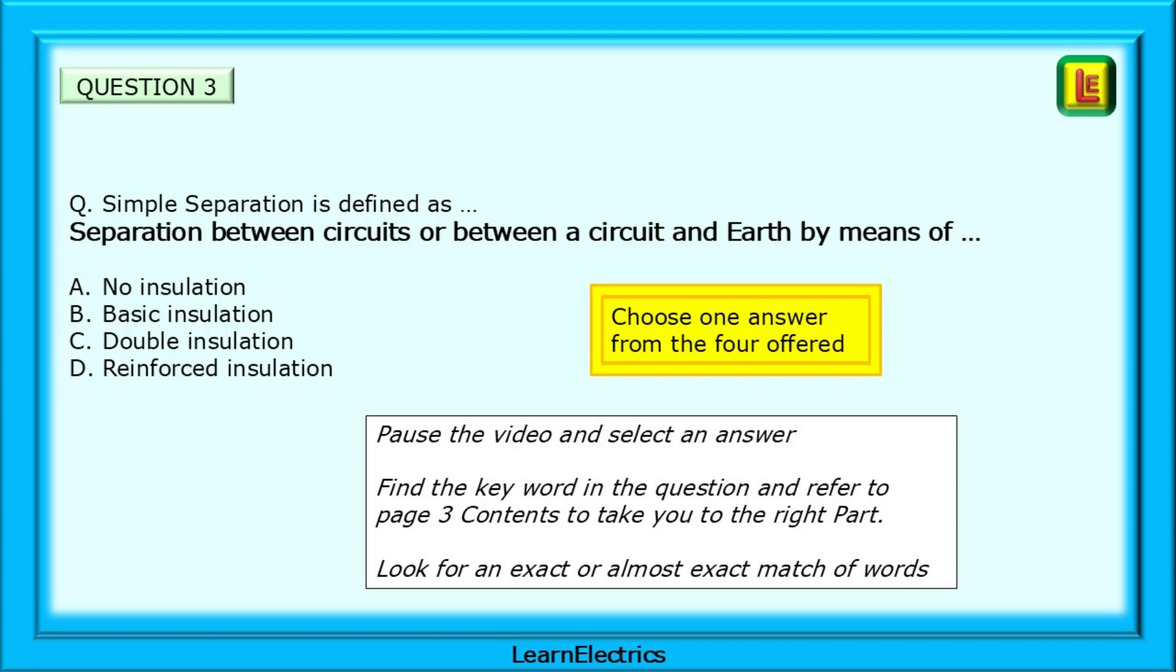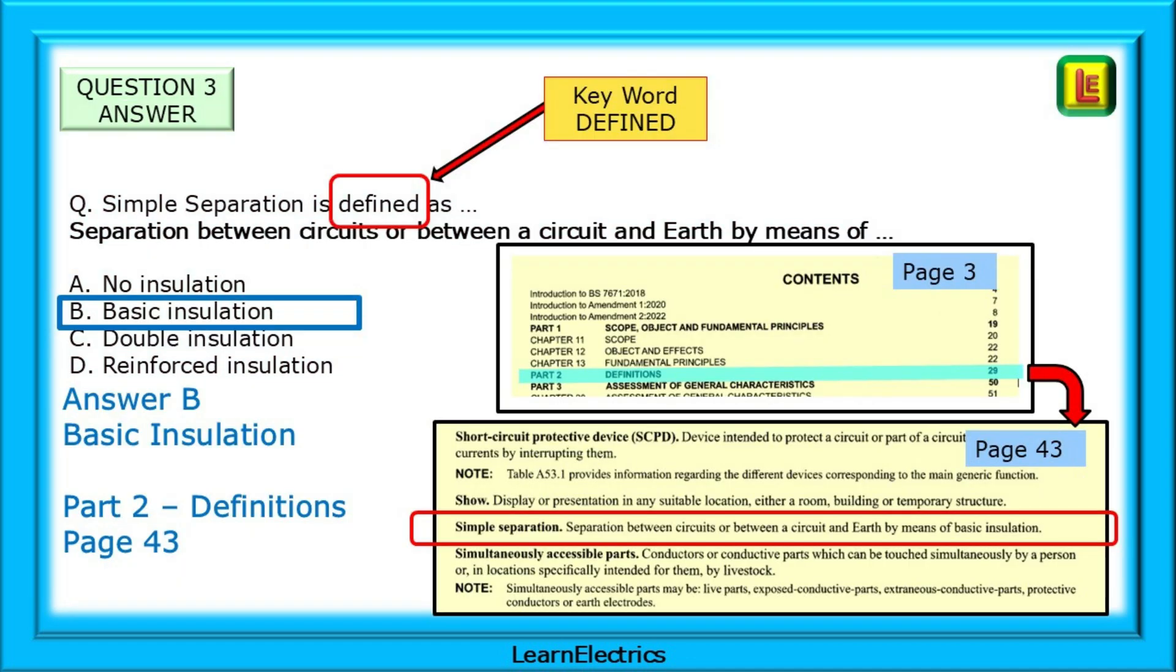Look for an exact or almost exact match of words for the answer. Answer B, basic insulation. The key word is the word defined. Turning to page 3, we have part 2, definitions. On page 43, we have the definition of simple separation, which is an exact word match for the question.